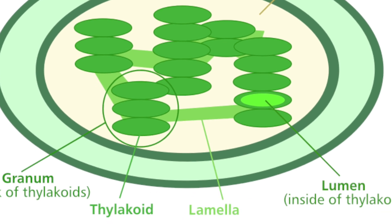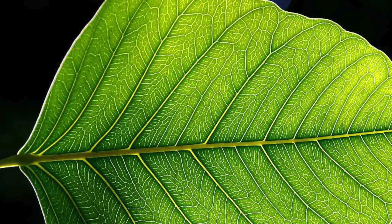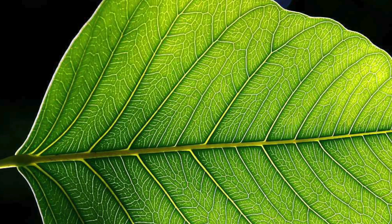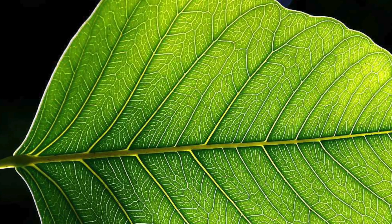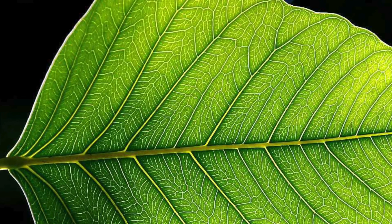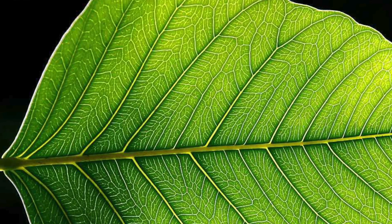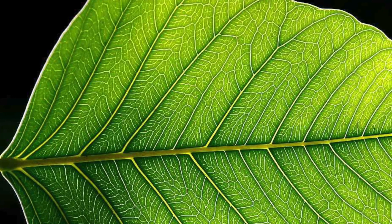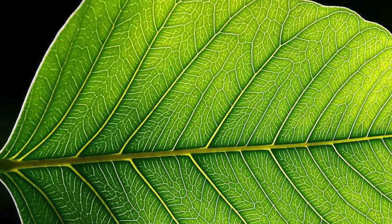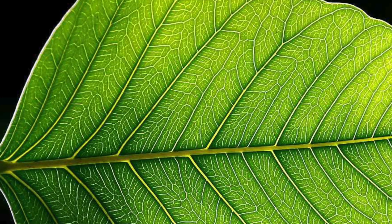They are also usually positioned in continuous layers, which means that they can absorb as much light as possible. They have a large permanent vacuole which helps keep the cell rigid and supports the stem, and they also keep the leaf spread out so it can capture as much light as possible.